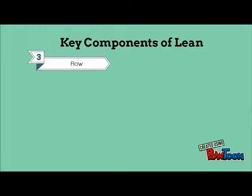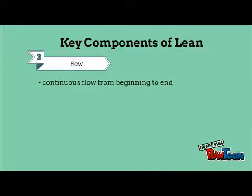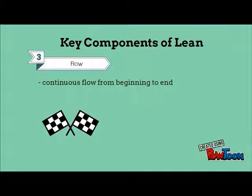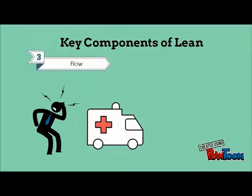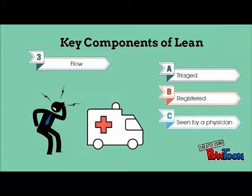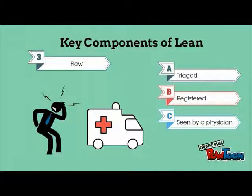Flow is a step in the Lean approach which ensures that there is continuous flow of value through the value stream, from beginning to end. For example, flow would involve that when a patient enters a health facility, they must be immediately triaged, registered, and seen by a physician, without waiting between steps. The net result of flow in this scenario is a reduction in wasted time.